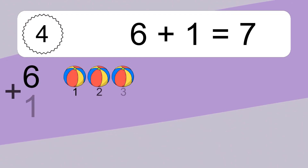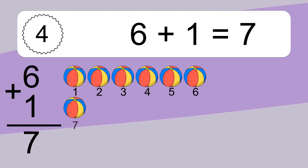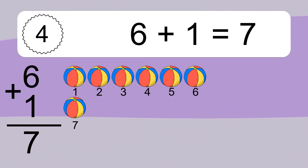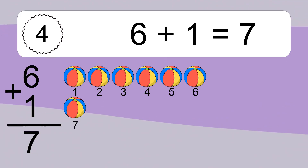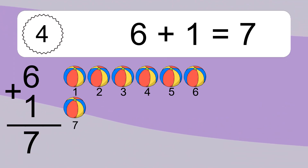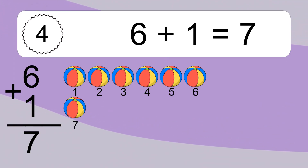6 plus 1 equals what? 6 plus 1 equals 7. Let's count it: 1, 2, 3, 4, 5, 6, 7.